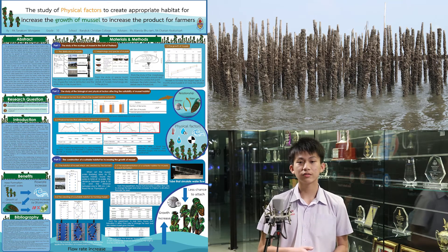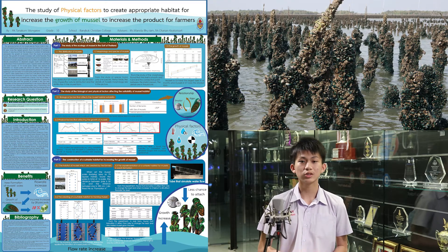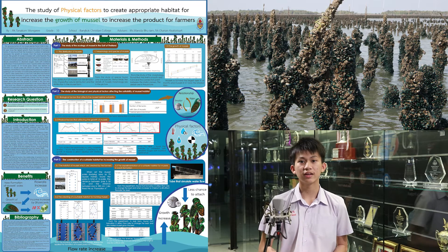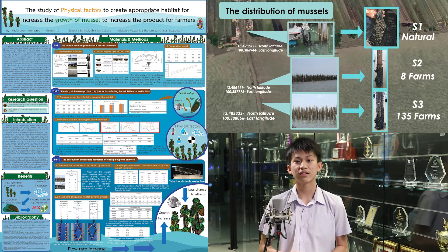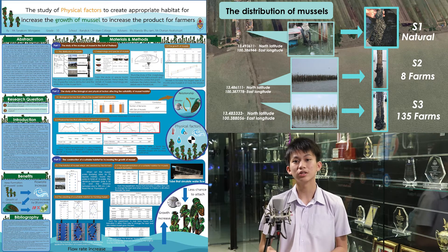First, I started by studying the ecology of mussels and I found that the distribution of mussels can be divided into two types: the distribution in nature and the distribution in the whole. Then, I set the study area in the 2T area in the Gulf of Thailand to study mussel morphologies and species.